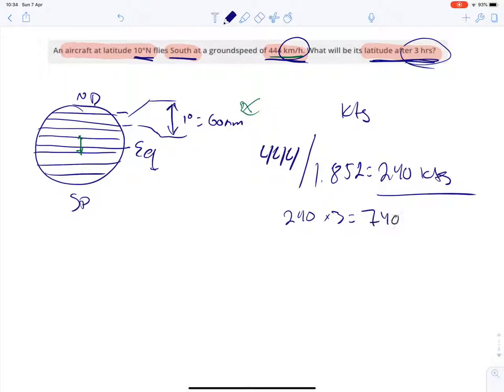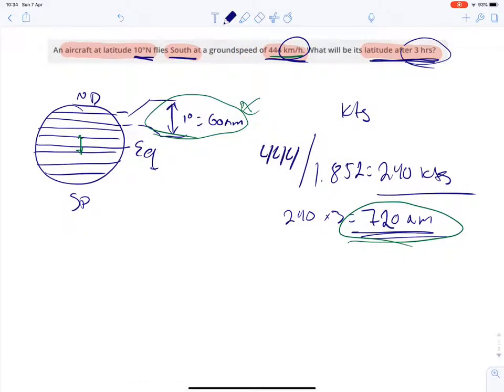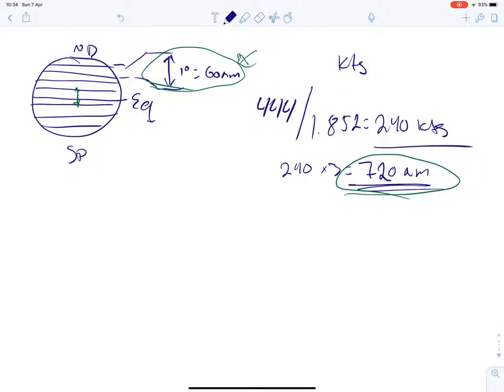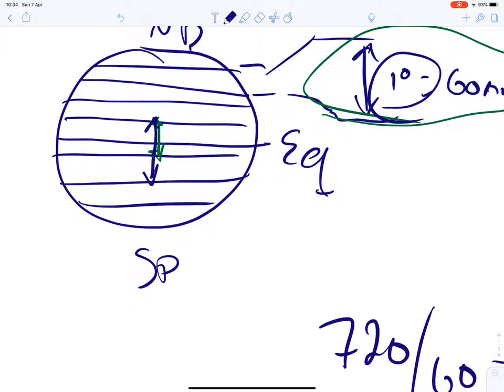740 nautical miles. So now we have some information, since we know that 1 degree is 60 nautical miles, we're going to be flying 740. So we take the 720, sorry, 720 here, 720 nautical miles. We take the 720 nautical miles and we divide that by 60 because 1 degree is 60 nautical miles. And we will get the 12 degrees of distance that we will fly.